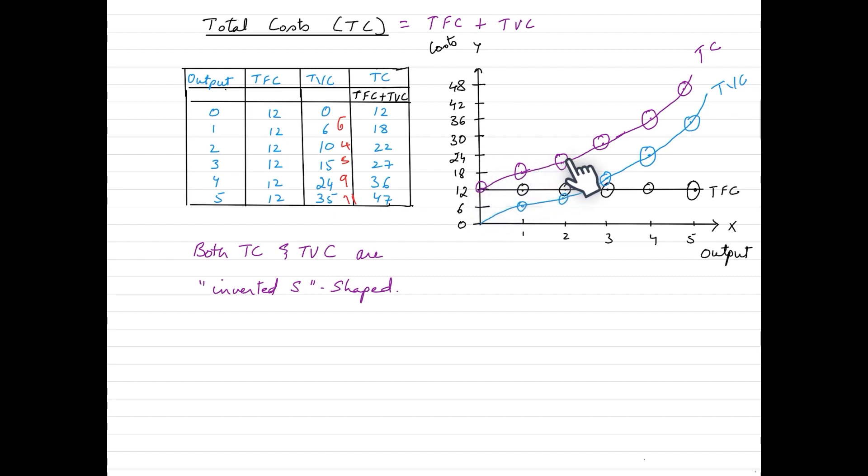TC curve will never begin from 0 because it always has a fixed cost component to it. So it will begin from the point where the fixed cost curve originates from. From here upwards, you would get the TC curve which is running parallel to TVC and the distance between TC and TVC is the representation of the fixed costs incurred by the firm.